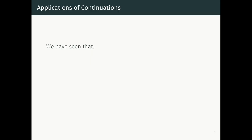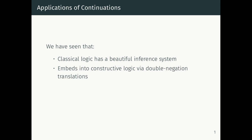Let's look at continuations again. What we've seen so far is that classical logic has a beautiful type inference system — a beautiful proof theory where proofs and refutations are precisely dual from each other, and all the de Morgan dualities you learned in earlier logic classes have a corresponding syntactic proof or refutation equivalent inside the inference system. We've also seen that classical logic, even though the proof theory doesn't intrinsically have an operational semantics, you can give it a computational reading by translating classical logic into constructive logic.